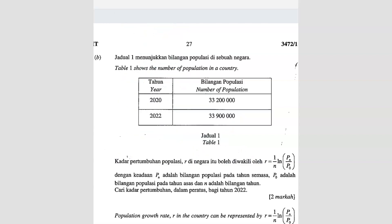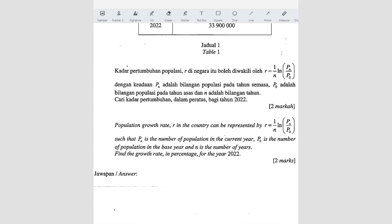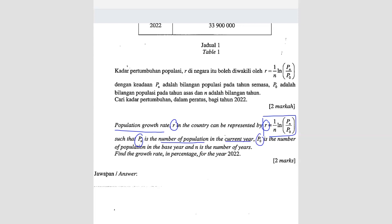Part b: the table shows the population of a country. The population growth rate is represented by a given formula, where r is the growth rate, P_n is the population in the current year, P_0 is the population in the base year, and n is the number of years.